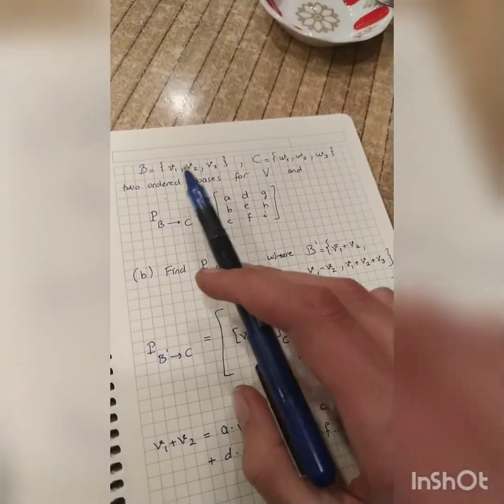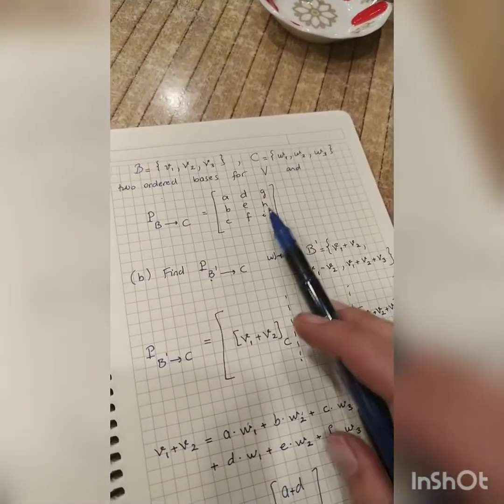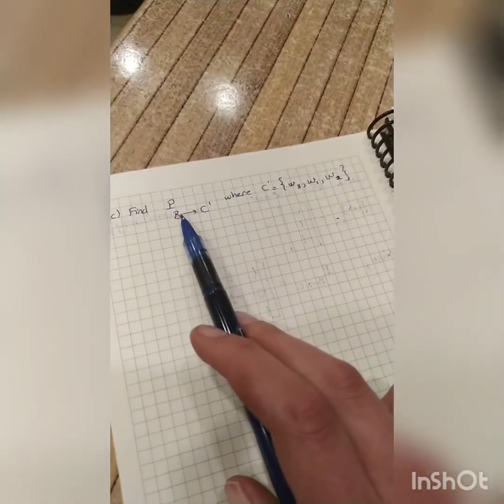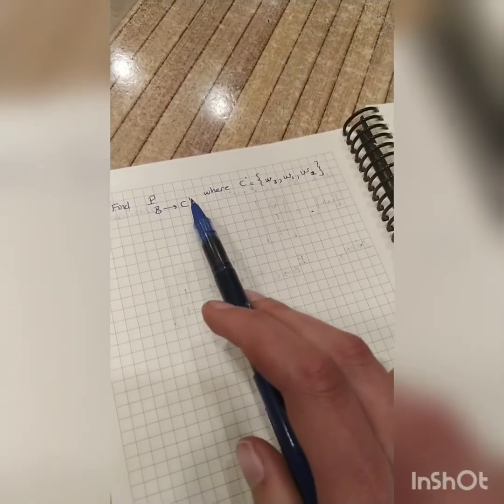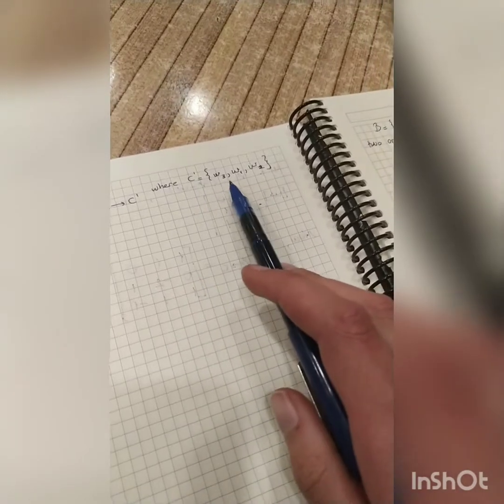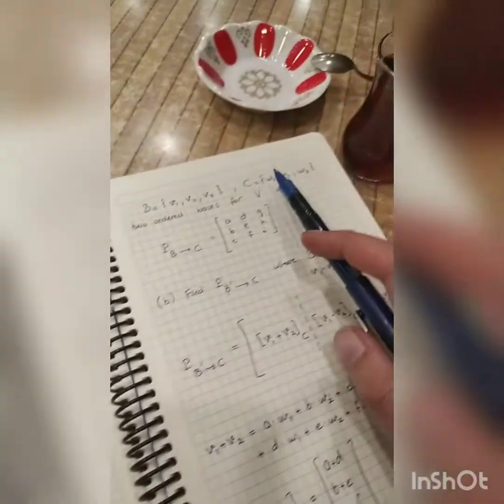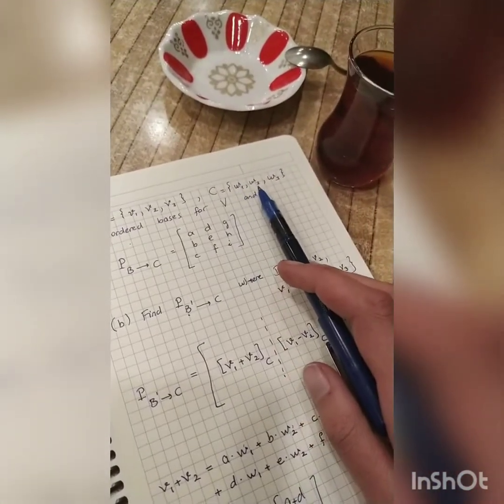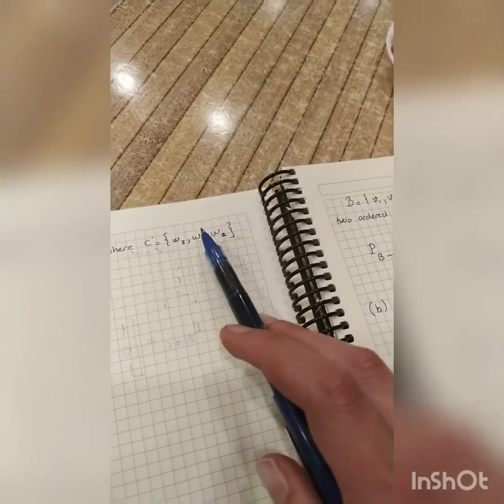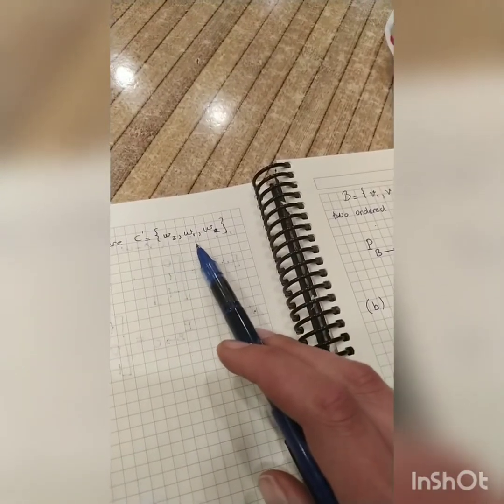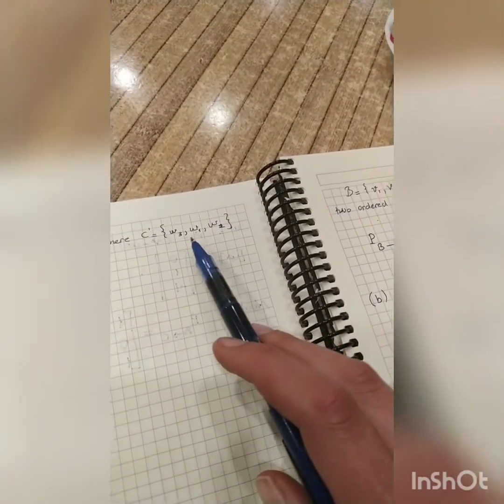With the same starting, with the same basis B and C, and this matrix P, the second question is asked. Find the transition matrix from B to C prime, where C prime is just consisting of W1, W2, W3, but in a different order. As you see, in C, they were ordered as W1, W2, W3, but in C prime, they are W3, W1, and W2.